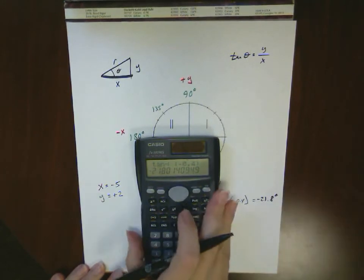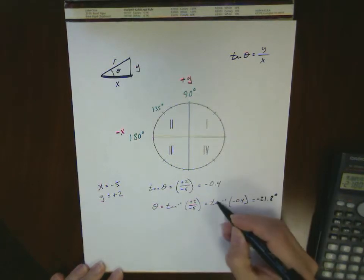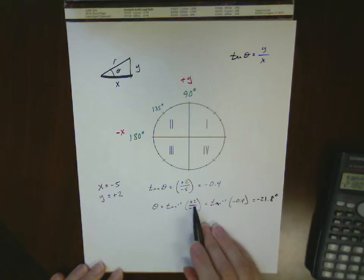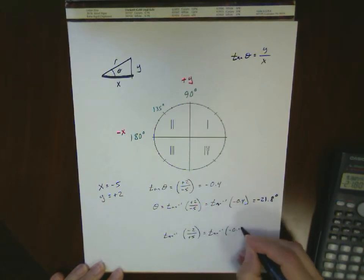Wait a minute - that's not a value between 90 and 180 degrees. What's going on? You have to remember that calculators don't know which quadrant you're in. When they see a value like -0.4, they don't know whether the +2 or the -5 was negative. They're thinking this looks like the inverse tangent of -2 over +5, which would also be the inverse tangent of -0.4.